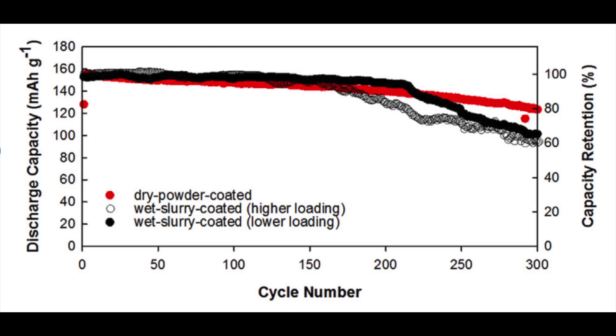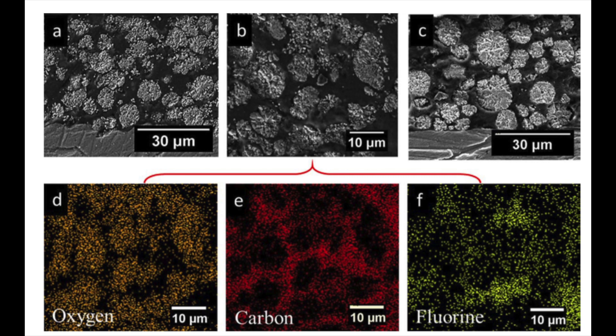They cycled the cells and found a decent capacity retention of 80% for more than 300 cycles. Two control electrodes were made using a wet process using two different loading densities and being careful to keep the other variables consistent between the wet and the dry. Surprisingly, the dry electrode actually maintained a higher capacity at 80% compared to the two wet electrodes at 60 and 65%. This was from the data of 20 coin cells, so it was not an isolated occurrence.